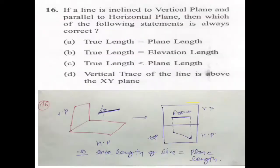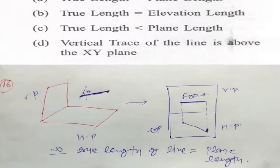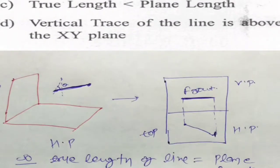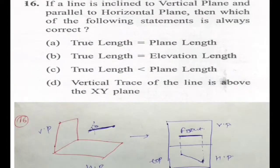Question 16: a line is inclined to the vertical plane and parallel to the horizontal plane — which statement is always correct? The concept is: whenever a line is parallel to the horizontal plane, you will get the true shape of the line in the top view. So we draw the top view and front view, and in the top view you get the original length of the line — true length equals plan length.